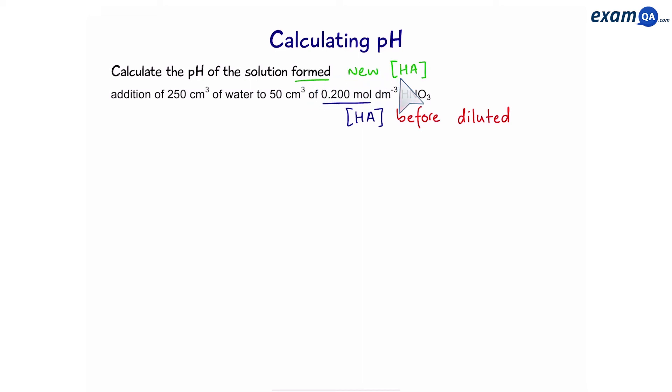Then, from there, we can work out H+. So, for a dilution, we use this equation, C1V1 equals C2V2. This is something we looked at when we done back titrations in AS. C1V1 means initial concentration times initial volume, and C2V2 means final concentration times final volume.